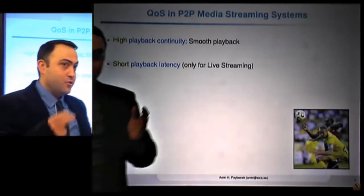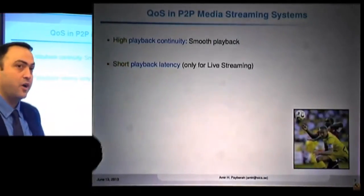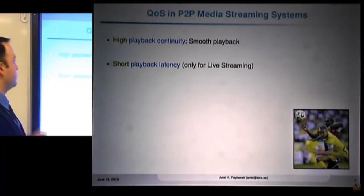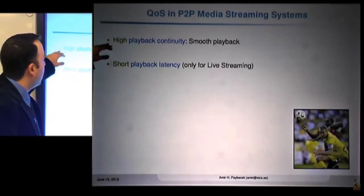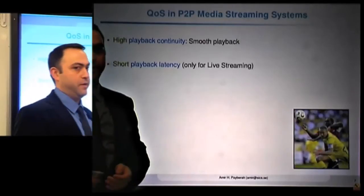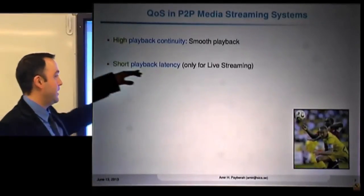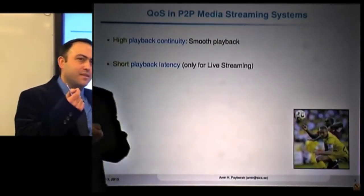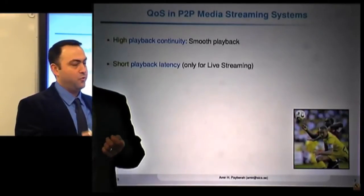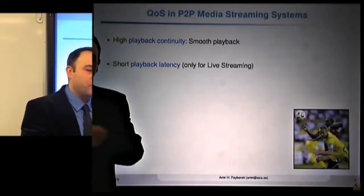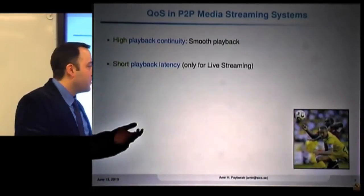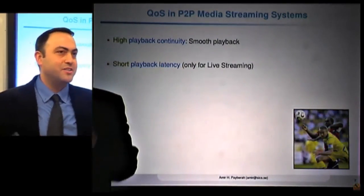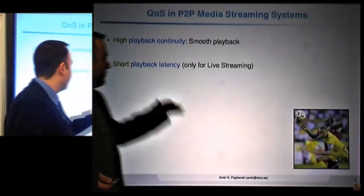Our goal is not merely to use peer-to-peer, but to provide high quality. Quality of service in media streaming is defined by two terms: high playback continuity — smooth playback — and short playback latency, which matters for live streaming. Playback latency is the difference between when you watch the video compared to the source. For example, you don't want your neighbor celebrating a goal before you see it.